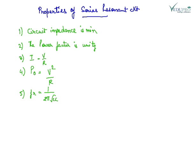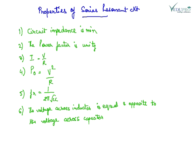At resonance, the resonant frequency is 1 upon 2 pi root LC. The voltage across the inductor is equal and opposite to the voltage across the capacitor.